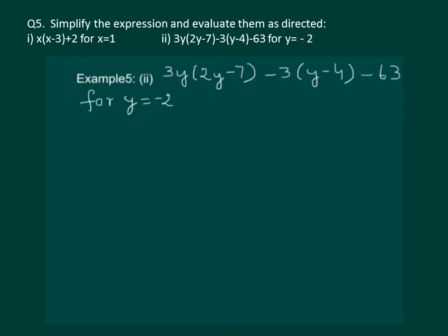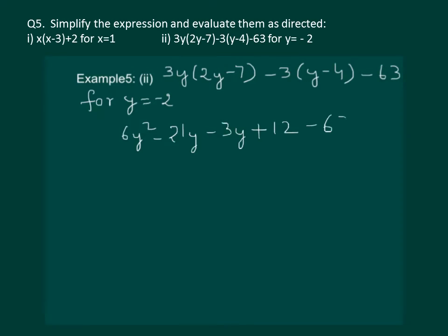We start with 3y into 2y, this gives us 6y squared. Then the minus sign. Next step is 3y multiplied by 7, that would be 21y, minus 3 multiplied by y gives 3y, minus 3 into minus 4 is plus 12, and minus 63 as it is.